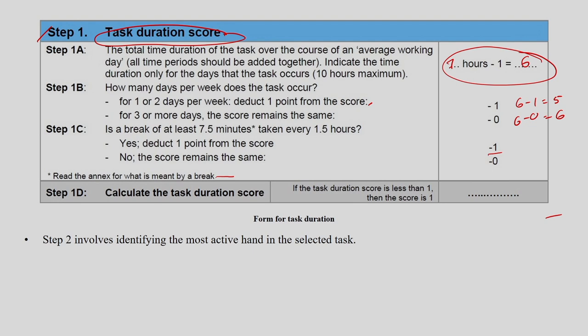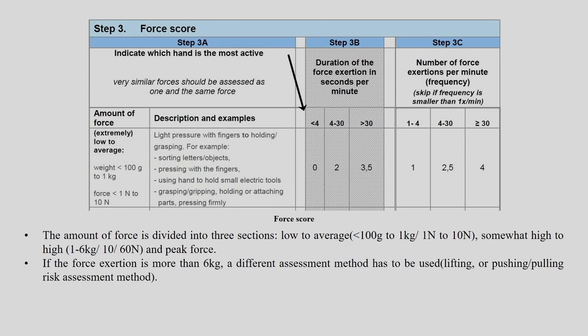Step 2 involves identifying the most active hand in the selected task — either left or right. You need to identify which hand is mostly active. The next step is the force score calculation. In step 2, you identify the dominant hand — for example, if the right hand is dominant, we will assess the right hand. Very similar forces should be assessed as one and the same force.